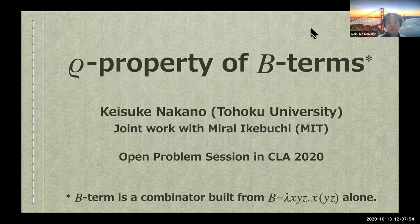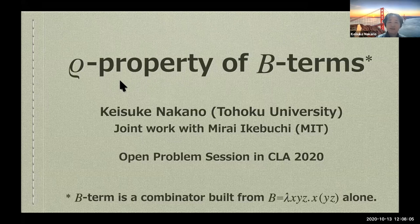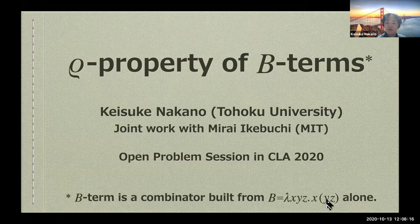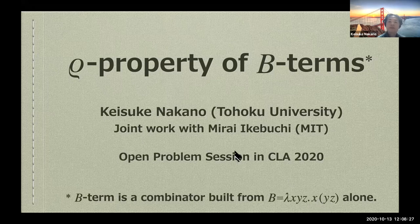I'd like to explain the open problems about combinators in combinatory logic. I call it the loop property of B terms. The B term is a combinator from only this B combinator. The B combinator is defined like this — it is a function composition. It takes two functions and an argument and returns X of Y of Z. This is just function composition, a well-known combinator called B.